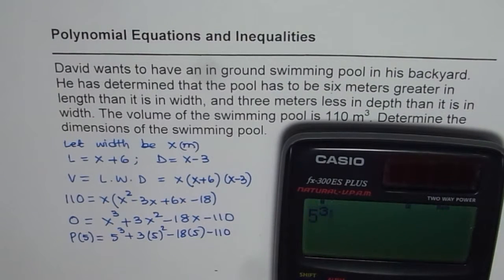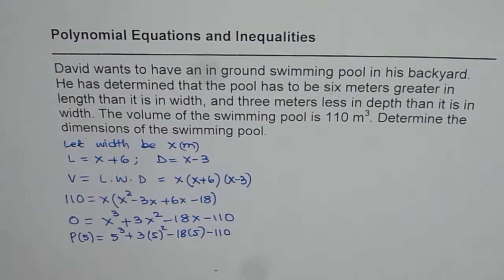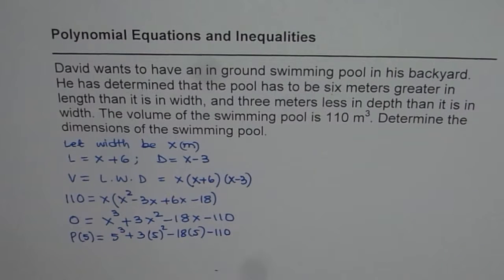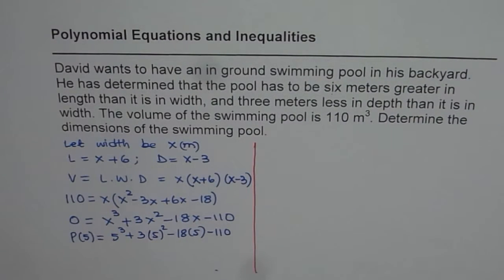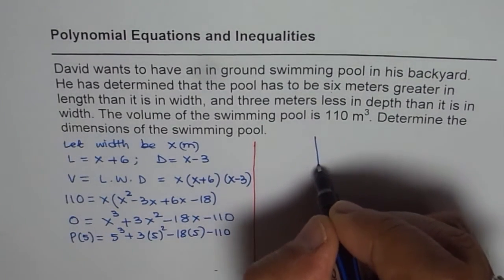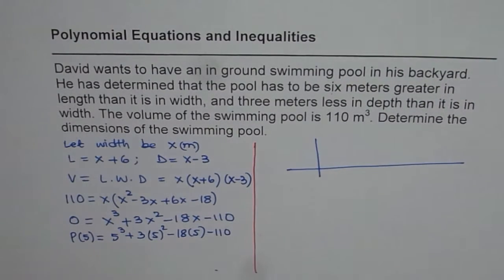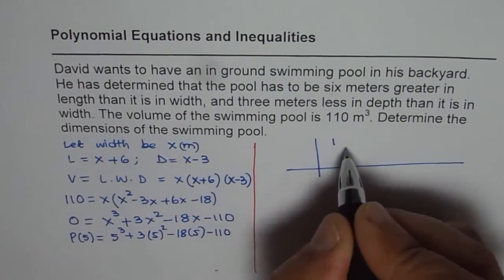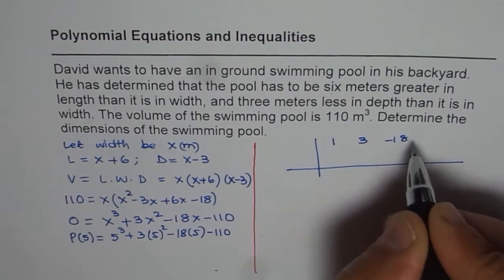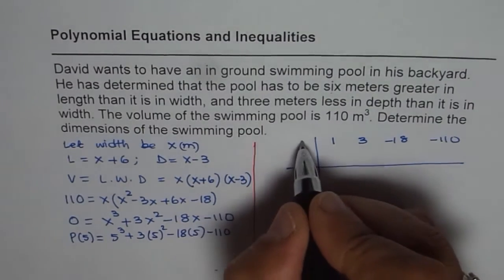Since p(5) = 0, that means x − 5 is a factor. To find the other factors, we can do synthetic division. The coefficients for us are 1, 3, −18, and −110. We divide by 5 since 5 gave us zero.